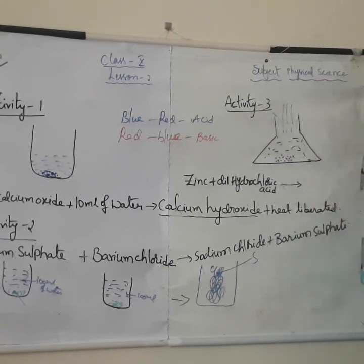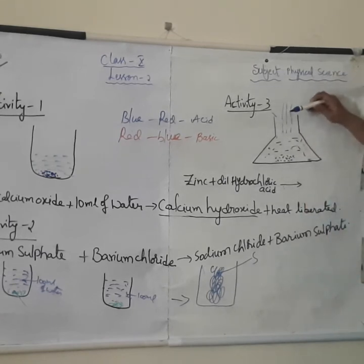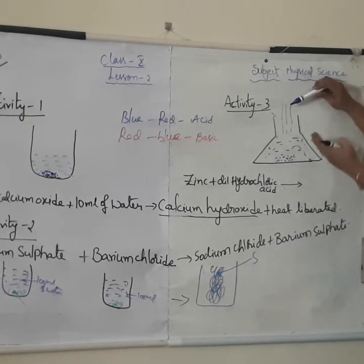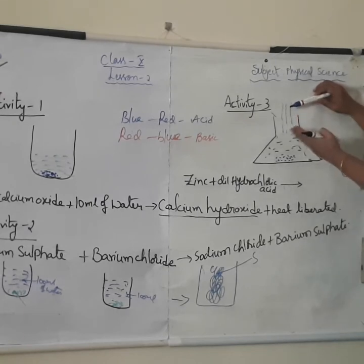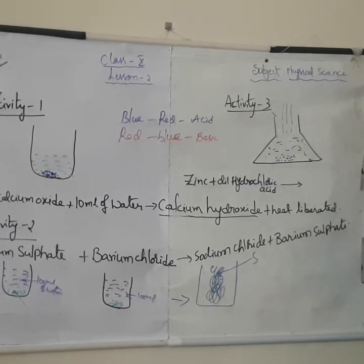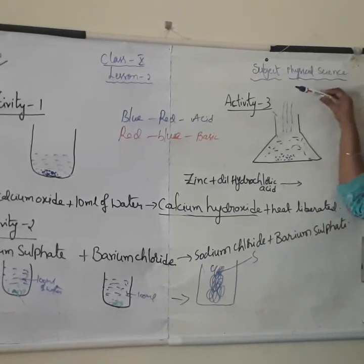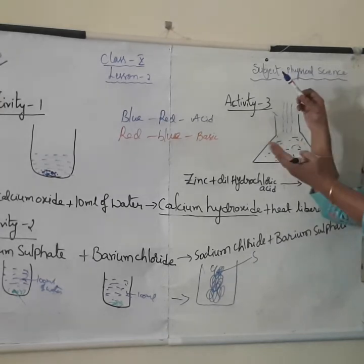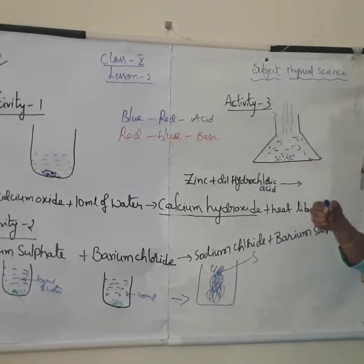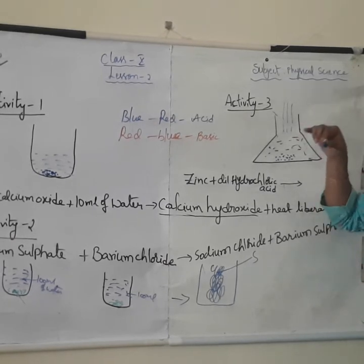You bring one burning matchstick and place it nearer to where the gas is evolving. Just you should not keep it attached with the flask — just place it near the conical flask. Then immediately that burning matchstick is put off the flame. When you place the burning matchstick near the neck of the conical flask where the gases are releasing, then immediately the burning matchstick will be put off the flame.